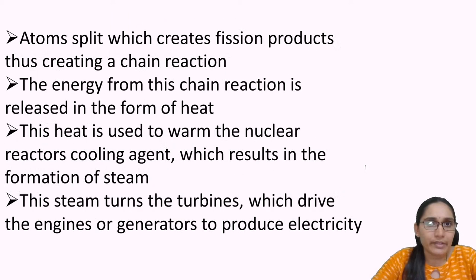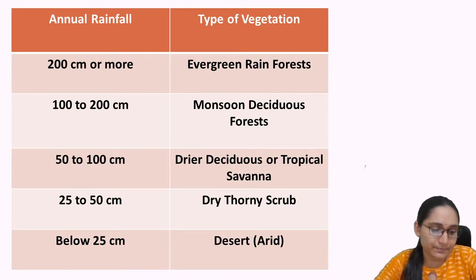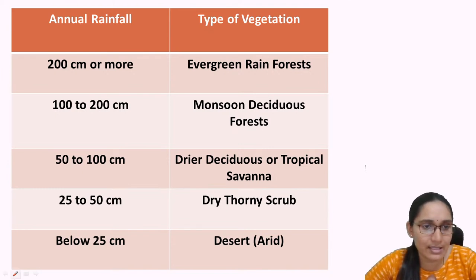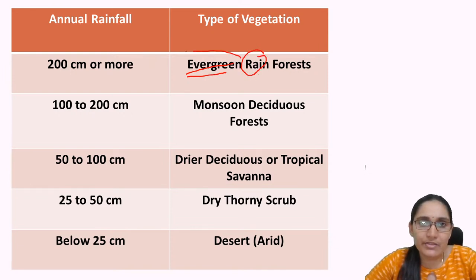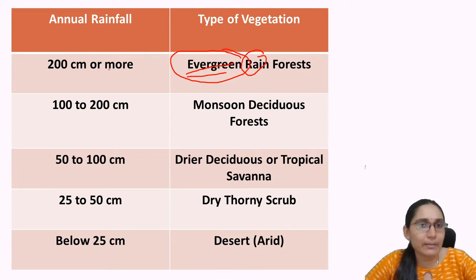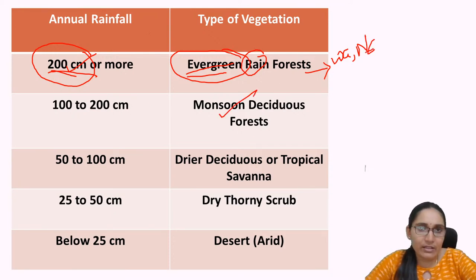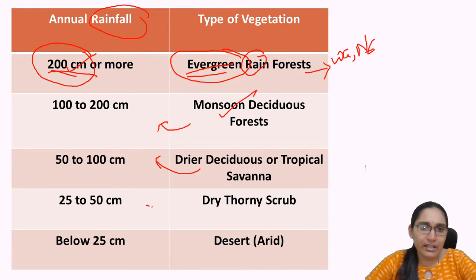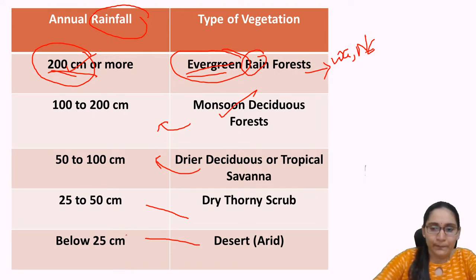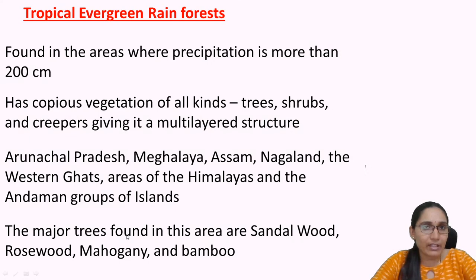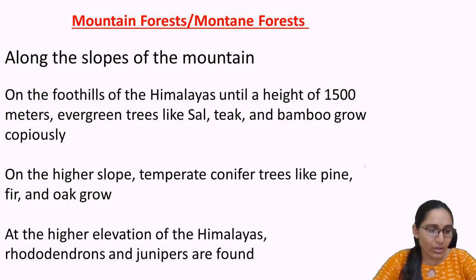We were discussing about the types of forest. We will quickly go through the slides again. We have the evergreen rainforest where the trees are evergreen because of high availability of rainfall — seen in places where annual rainfall is more than 200 centimeters, such as the Deccan gardens and the northeast states. We also have monsoon deciduous forest, drier deciduous, tropical savannah, dry thorny scrub, and deserts. Today we will take up mountain forest.